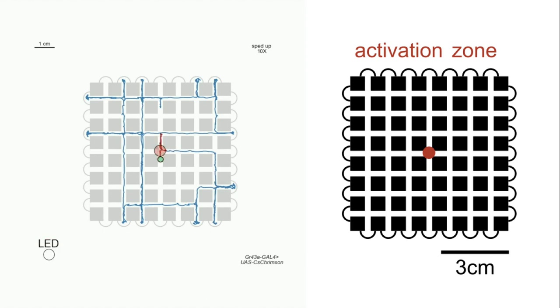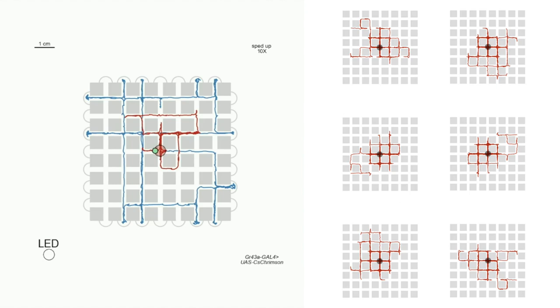But upon encountering the activation zone, flies performed long and elaborate local searches centered around the fictive food site. They were able to explore the surrounding blocks and find their way back to the activation zone without straying to the arena edge. Here we've plotted some of the longest searches flies performed in the Fly-a-delphia arena.